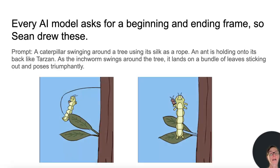The prompt: a caterpillar swinging around a tree using its silk as a rope. An ant is holding onto its back like Tarzan. As the inchworm swings around the tree, it lands on a bundle of leaves sticking out and poses triumphantly.